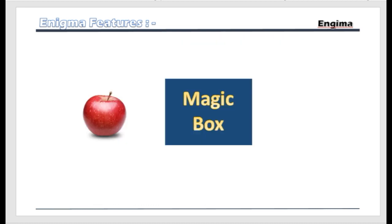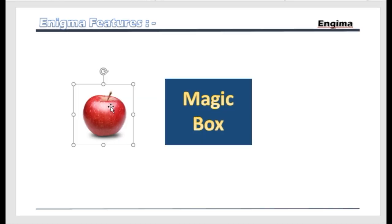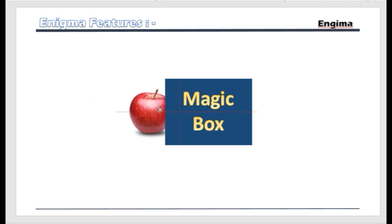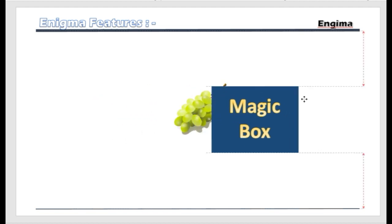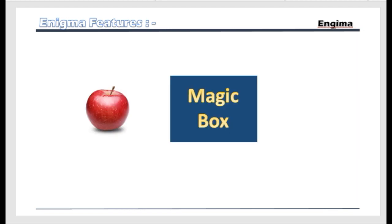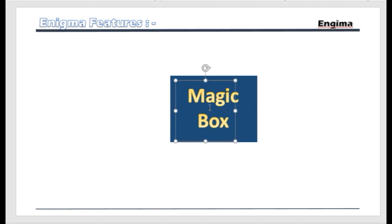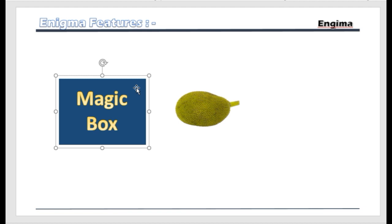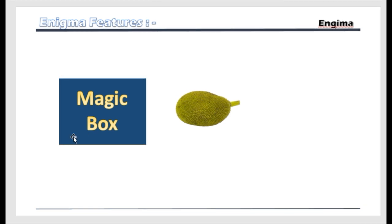You can think of it like a magic box. Suppose an apple is the input — apple goes into the magic box and something different comes out like a grape. Again you use the same magic box with the same input, and now a different output comes out like a jackfruit. This is actually the main feature of Enigma.